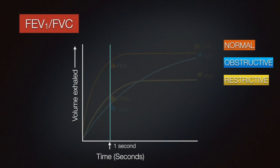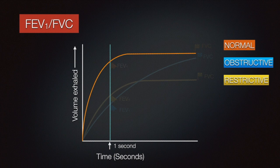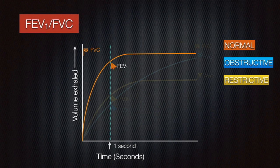Have a look at the volume against time plot for a forced exhalation. If you look at the normal trace, about 80 to 85 percent of volume is exhaled in the first second, which is FEV1. And the maximum volume exhaled is forced vital capacity, FVC.